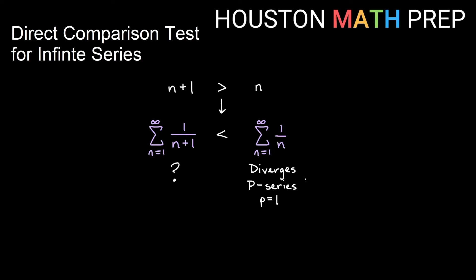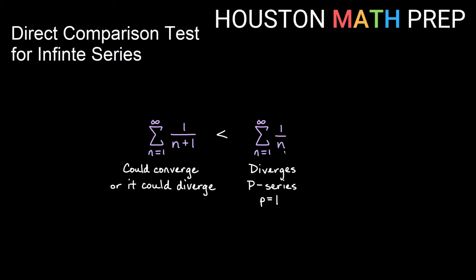Now let's look at the opposite situation: the sum of 1 over n + 1 versus 1 over n. Since n + 1 is certainly bigger than n, the sum of 1 over n + 1 is actually less than the sum of 1 over n. The question becomes: 1 over n sums to an infinite amount, and I'm less than that sum — do I converge or diverge? The problem is this could add up to an infinite amount just more slowly, or it could converge to some real number like a million. So based on this direction of inequality, we don't really know. If I'm smaller than an infinite amount, I might just reach that infinite amount less quickly, or I may add up to some real number. This direction with something diverging as the comparison does not give us the information we need.